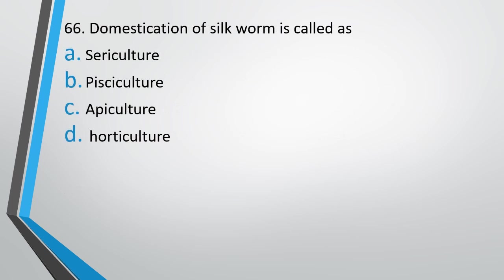Question number 66. Domestication of silkworm is called as: sericulture, pisciculture, apiculture, or horticulture. The correct answer is option A — sericulture.